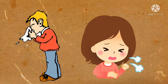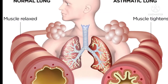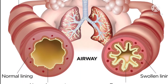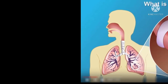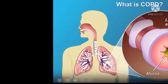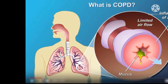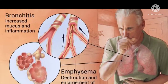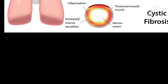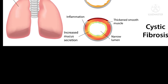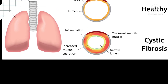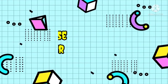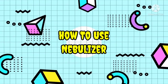A nebulizer is used in conditions like flu, cold, cough, and certain respiratory diseases such as asthma, COPD (chronic obstructive pulmonary disease), bronchitis, as well as cystic fibrosis. Now we are going to discuss how to use a nebulizer effectively.